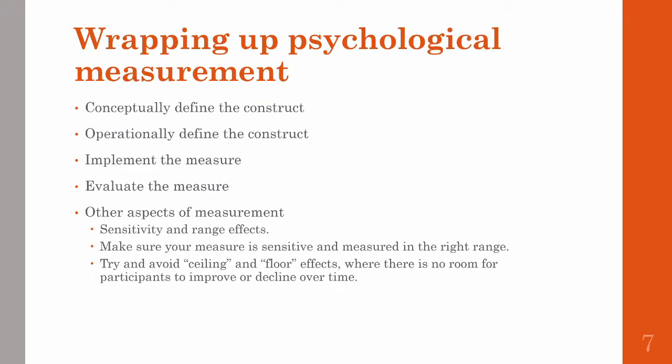Wrapping up everything we've talked about in the past few videos on psychological measurement, reliability, and validity, we can outline some practical steps. First, conceptually define the construct you want to measure — have a clear definition, which allows you to make good decisions on how to measure it. Make it specific: don't just study memory, study long-term episodic memory. Then decide on how you're going to operationally define your measure. It's always good to use an existing measure since other researchers may have done the hard work for you, but it's totally okay to create your own. Be able to quantify what you want to measure, then implement your measure in a way that maximizes reliability and validity. Test all of your participants under similar conditions and make sure they're paying attention and not too distracted.